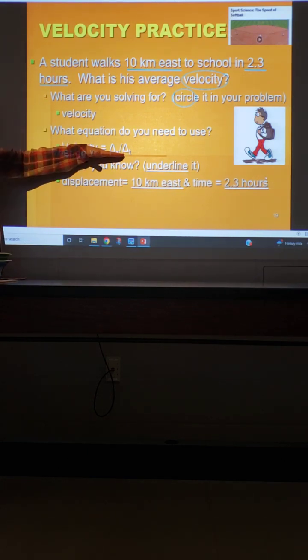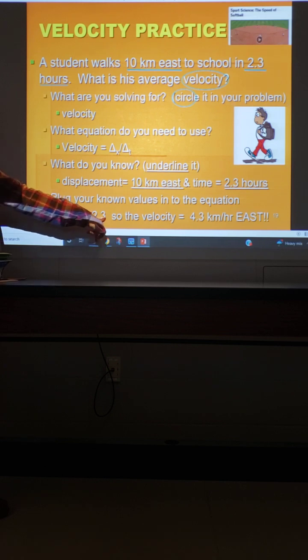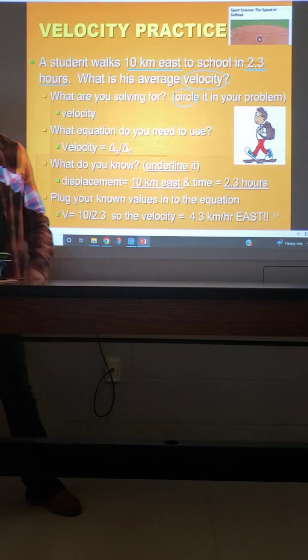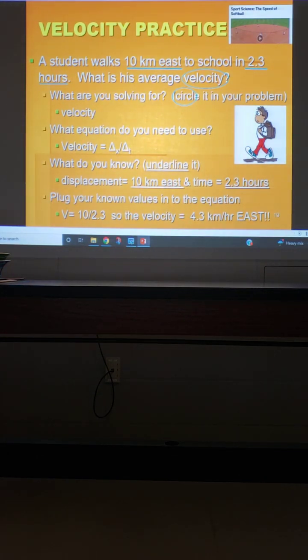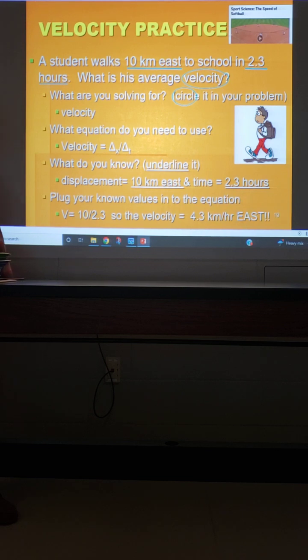Now we're just going to plug those in. Our displacement or our change in position divided by our time. And so we're going to get 10 divided by 2.3. Good bet. So our kilometers went with a 10. Our hours went with a 2.3. So that's where the kilometer per hour comes from. If it was a meter and a second, then we have meters per second. If it was a centimeter and a minute, then we have centimeters per minute. Whatever the units are that are given in the problem, that's what you use for your units that you come up with. Okay. And then because this is displacement and because it's velocity, which is vector, we have to include east. Good? Good? Okay.